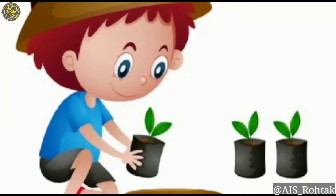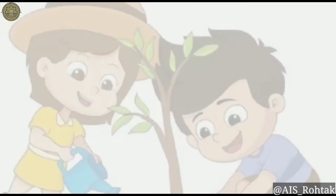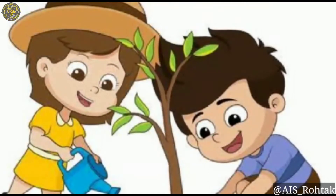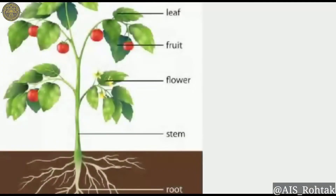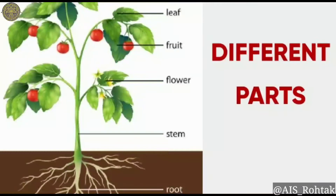Plants are home to many animals, birds and insects. Plants give us food like fruits, vegetables, cereals and pulses. We eat different parts of plants as vegetables, like root, stem, leaves, fruits and flowers.